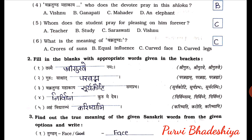Second one: Guru Ha Shakshat blank — the correct answer is Parabrahm. So: Guru Ha Shakshat Parabrahm. Third one: Vakratundah Mahakaya blank Samaprabha — the correct answer is Surya Koti. So: Vakratundah Mahakaya Surya Koti Samaprabha. Fourth one: blank Kurume Deva — the answer is Nirvidnam. So: Nirvidnam Kurume Deva.